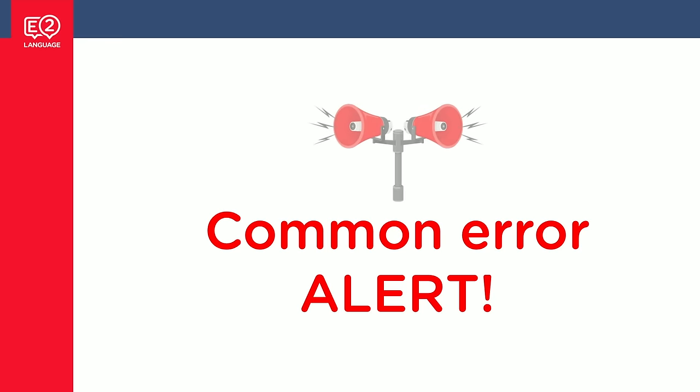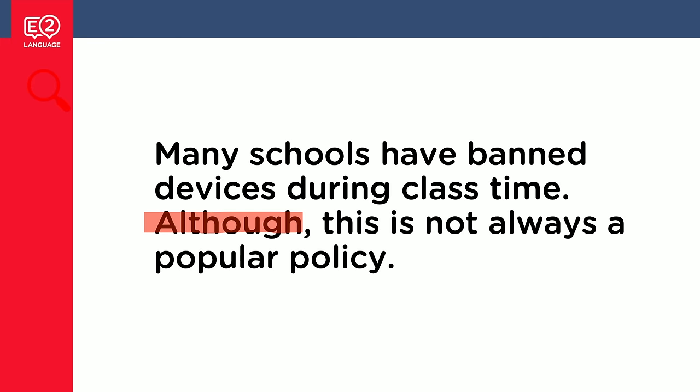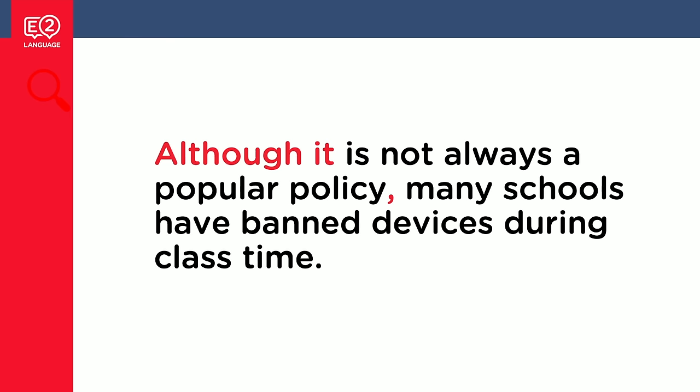Now here is a common error alert — this is something we often see in IELTS writing. Can you see the problem in this text? 'Many schools have banned devices during class time. Although this is not always a popular policy.' The problem is starting a new sentence with 'although' followed by only a fragment. Even though 'although' and 'however' have a similar meaning and are both used for contrast, grammatically we don't use them in the same way. You can't start a sentence with 'although, comma' and then put only half a sentence after it.